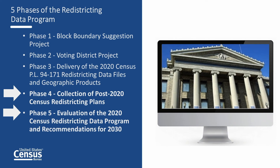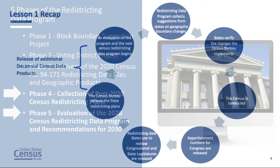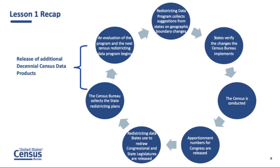Phase four is to collect the 118th congressional districts and the new state legislative districts from the states, and phase five evaluates and makes recommendations for the 2030 census redistricting data program.